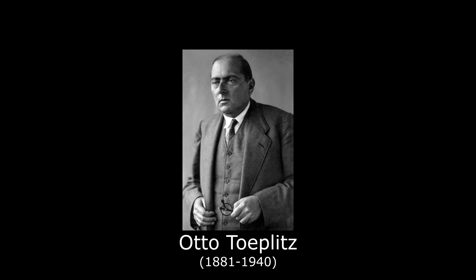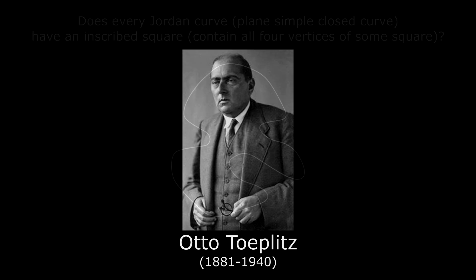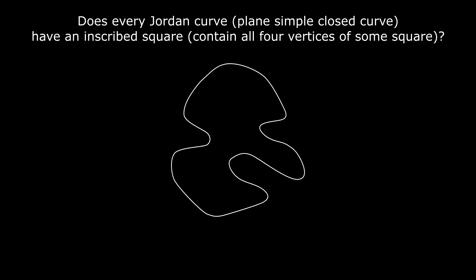The problem was proposed by Otto Teplitz in 1911. It asks if every Jordan curve, or plain simple closed curve, has an inscribed square, or contains all four vertices of some square.